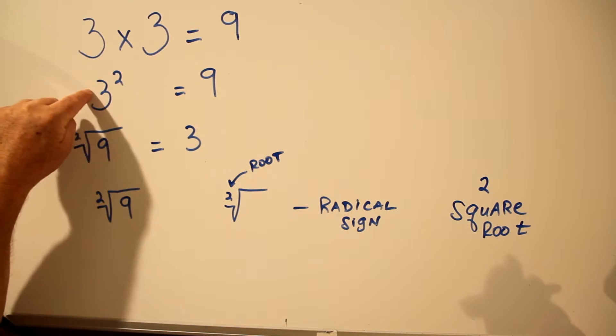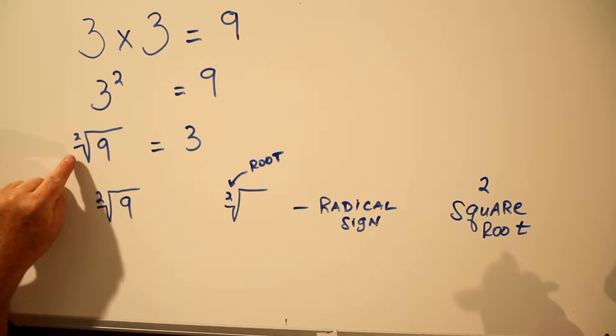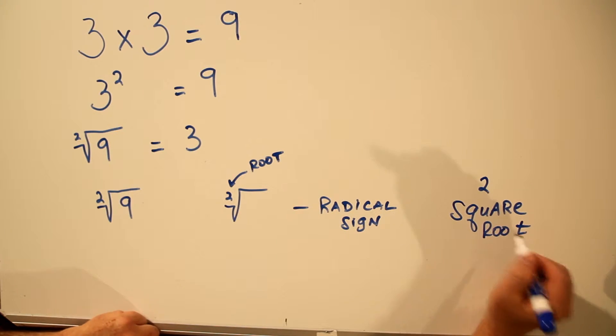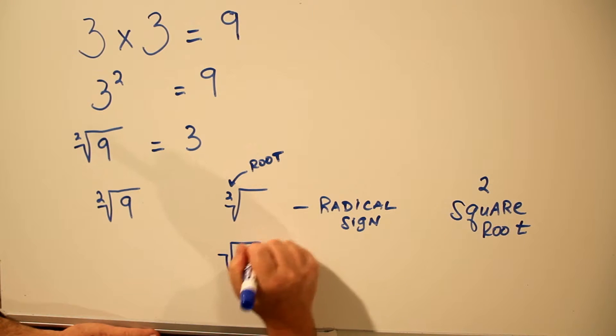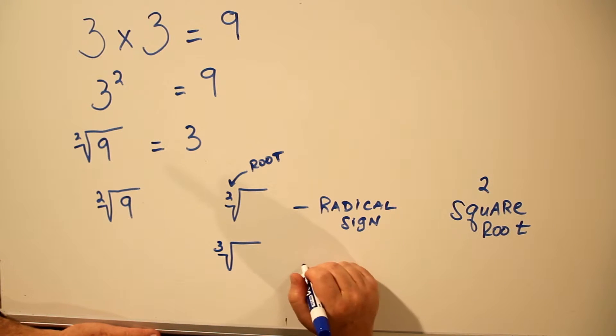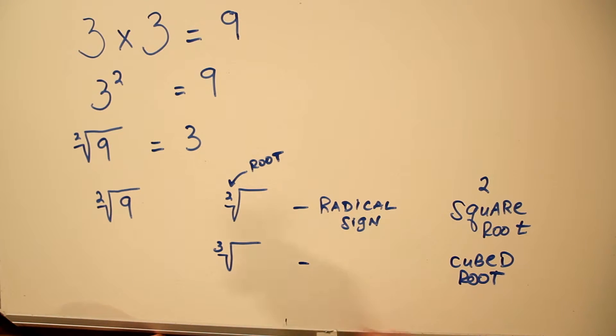Just like we say 3 squared, or 3 to the power of 2, we say root 2, or square root. If we had the radical sign with a 3, we would call it the cubed root. Just like we say 3 cubed, we would say cubed root. Any higher power, like 4th root, 5th root, we would just say the number.